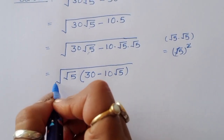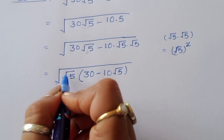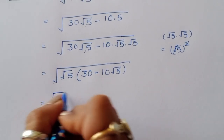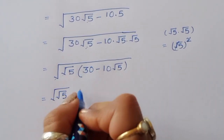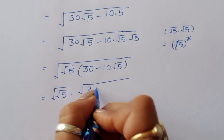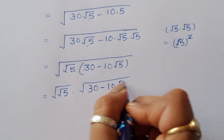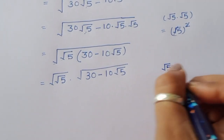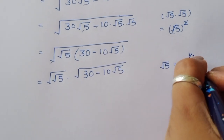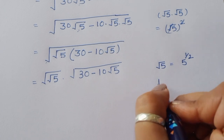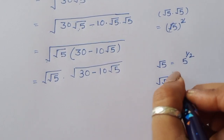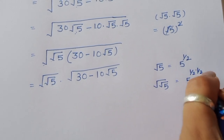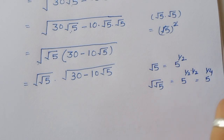Separating the double square root, we get square root of √5 times the single square root of (30 minus 10√5). We know that √5 = 5^(1/2), so square root of square root of 5 becomes 5^(1/2 × 1/2) = 5^(1/4).